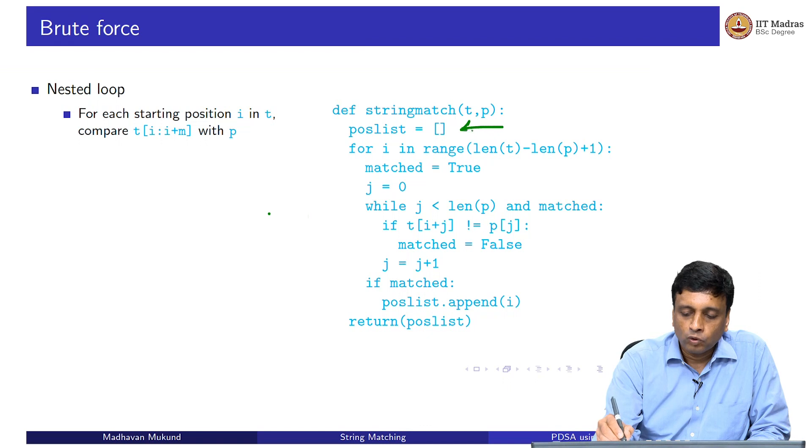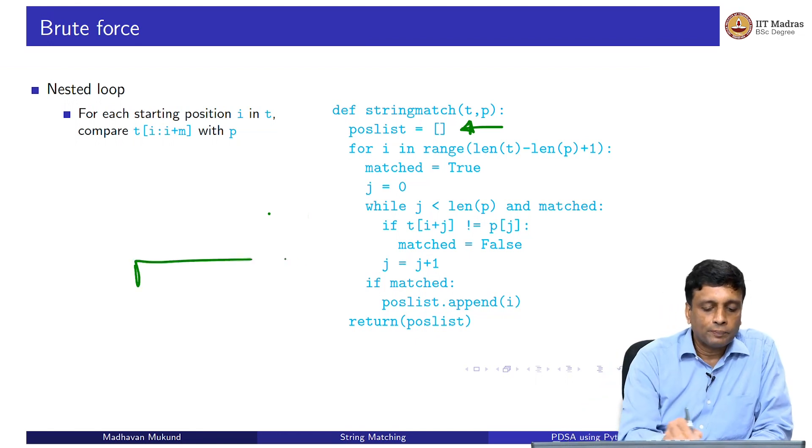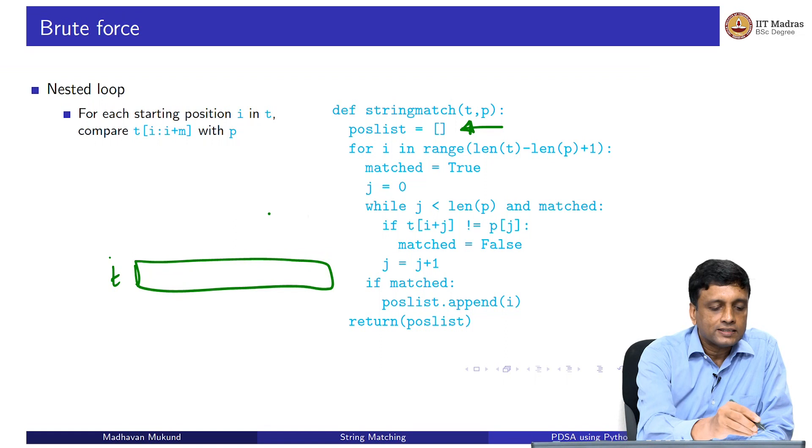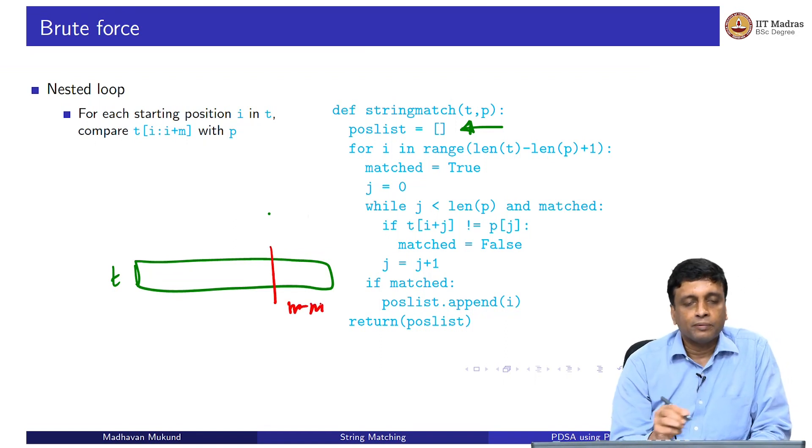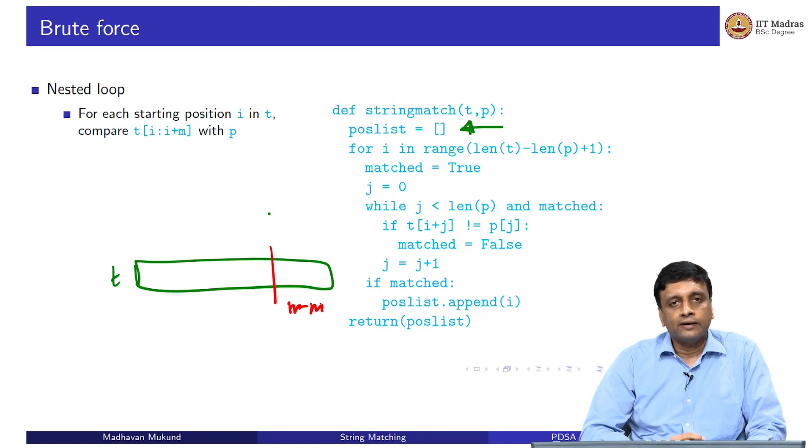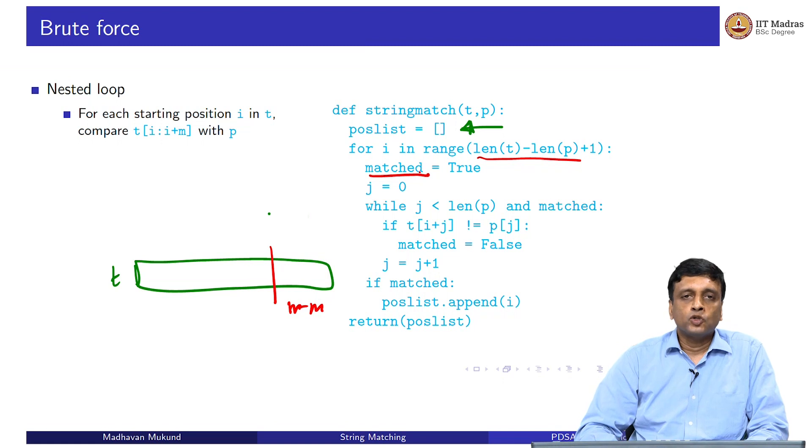We start first of all, we are going to report all the positions. We need to keep track of all the positions in the list which we initialize to be empty. And if I am going to look for a pattern of length m in my text, then it cannot start further than n minus m from the end, because if it is less than m characters from the end, then the pattern will not fit. I need to go only up to length of the text minus the length of the pattern. I start for every position from 0 to the length of the text minus the length of the pattern.